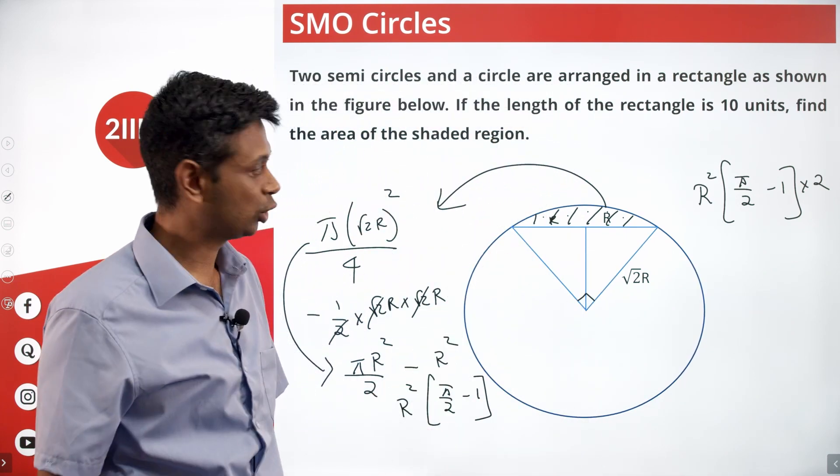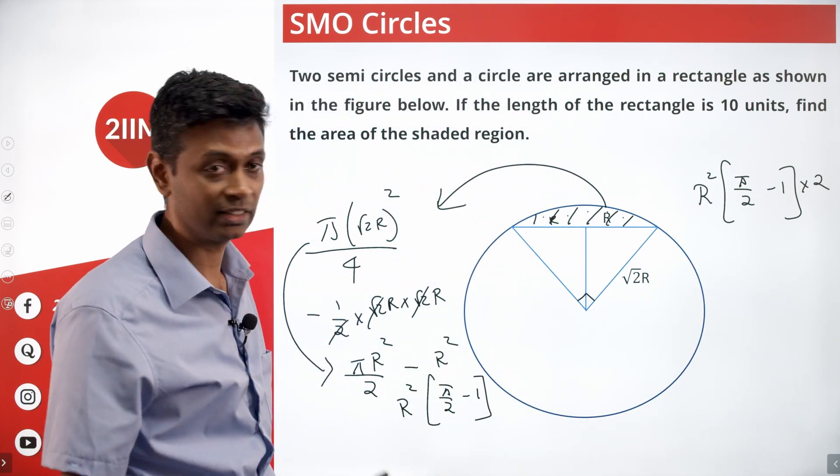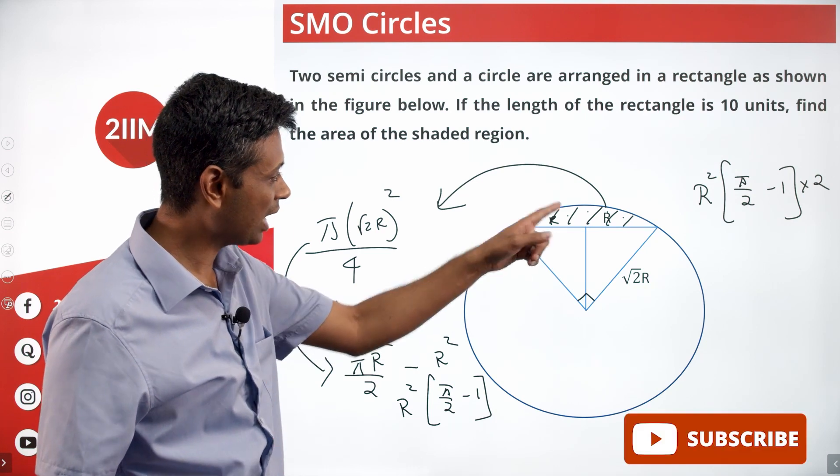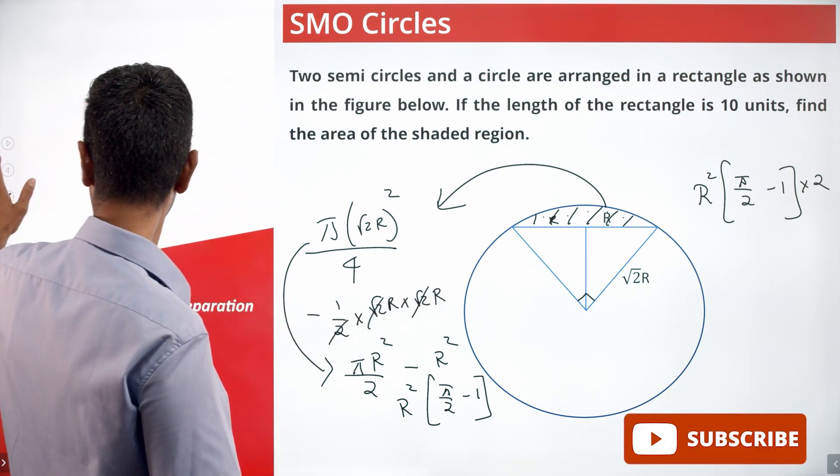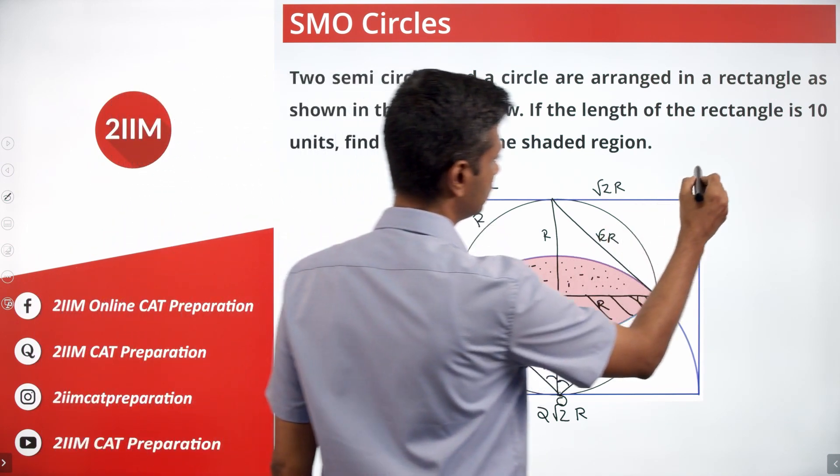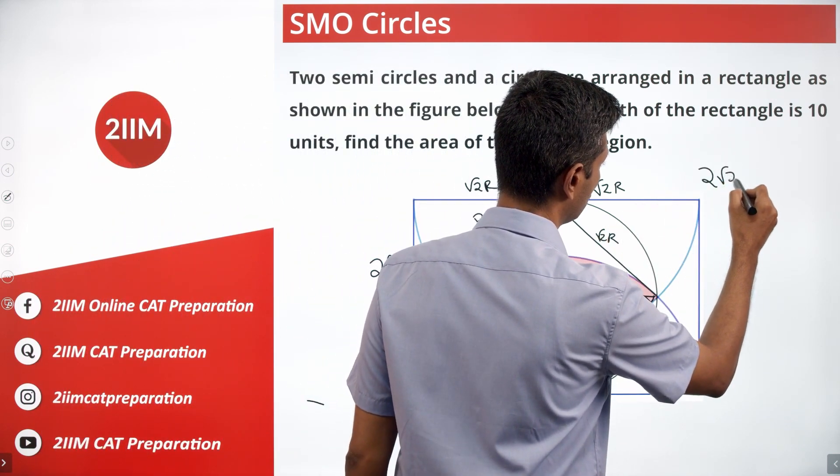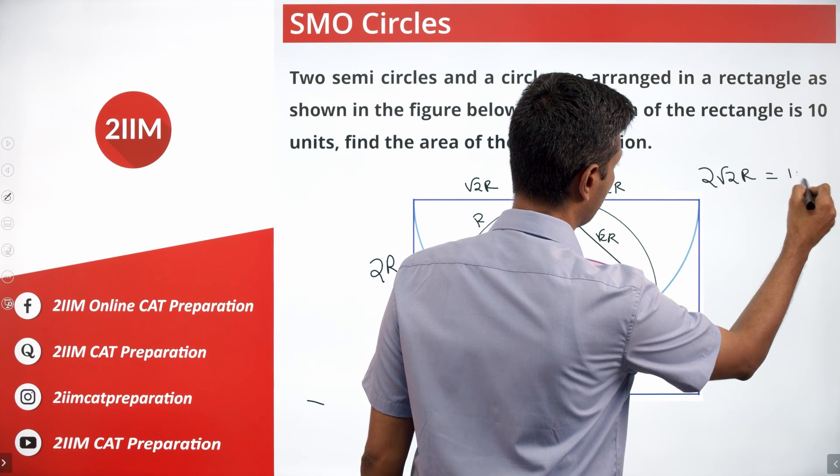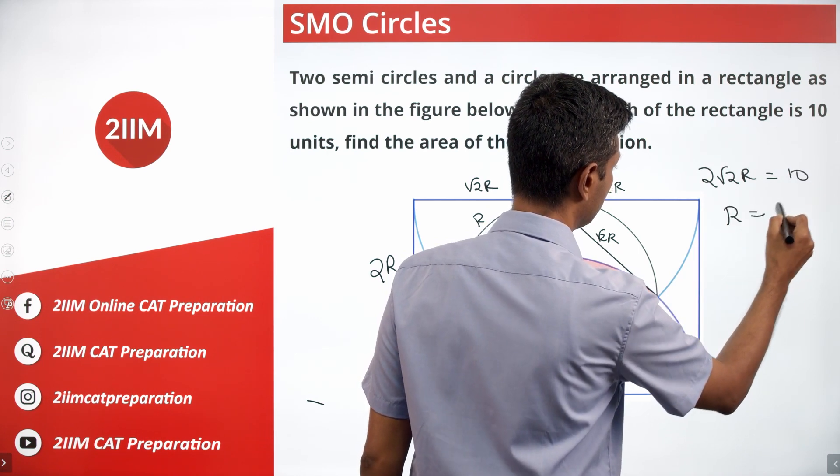We know R, we are true. We are told that the longer side of the rectangle is 10. So R should be, let's go back here. This is 2 root 2R. 2 times root 2R is 10, or R is 5 by root 2.